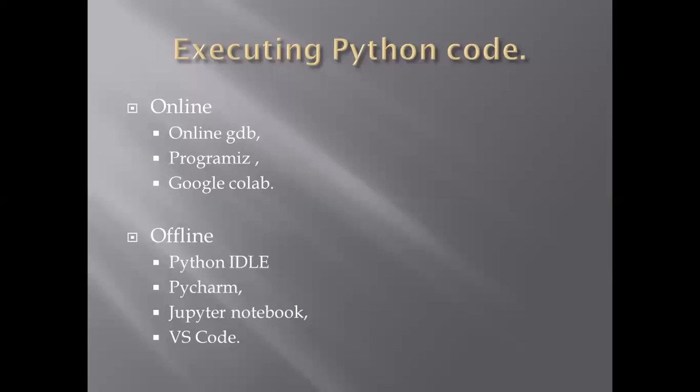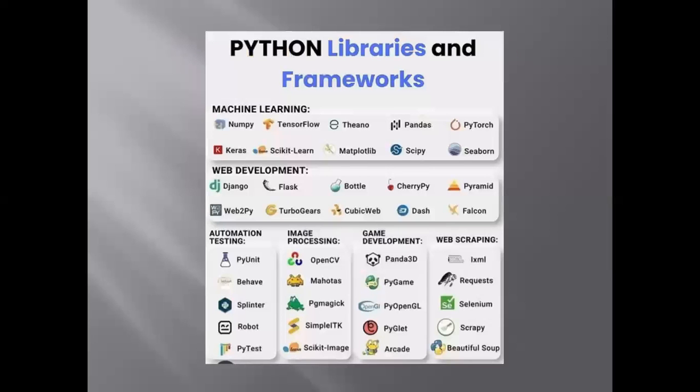These are the Python libraries and frameworks and their uses. In machine learning we use NumPy, TensorFlow, Pandas, and others. In web development we use Django, Flask, and Bottle. We also use Python for automation, testing, image processing, game development, and web scraping. These are the uses of Python libraries and frameworks.